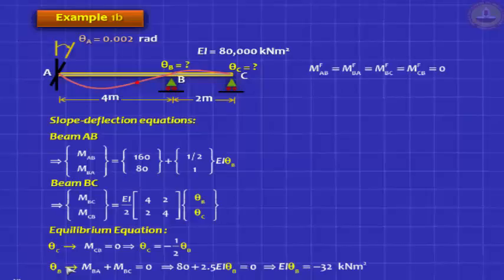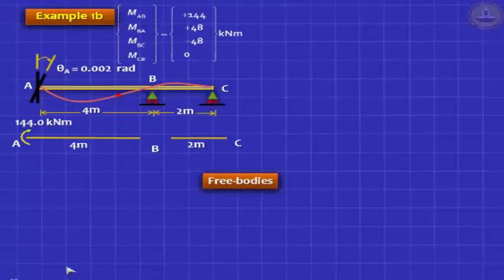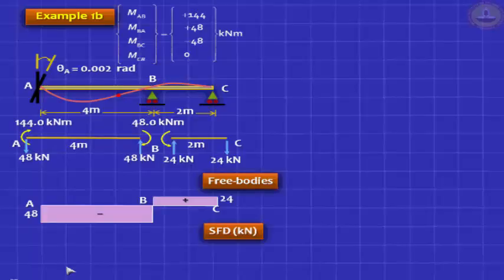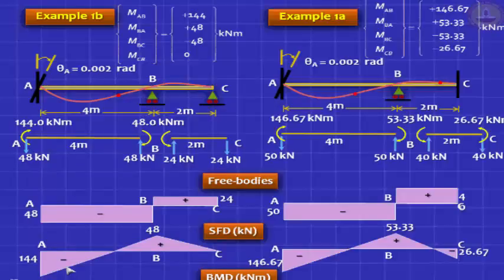You can substitute that value here, and proceed. You will get a solution for theta B. Plug it there in the original equation. You got the answers, and once you have the answers, you draw the free body diagram. Draw the shear force diagram. Draw the bending moment diagram. Now, it is good to compare both these problems, and look at the solutions. You will find that there is slight difference. When you have fixity at C, you have got a negative moment there at C. Otherwise, the moment there is 0. Actually, you have a sagging moment, it should be positive.